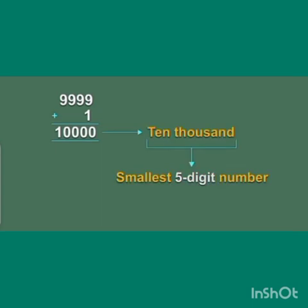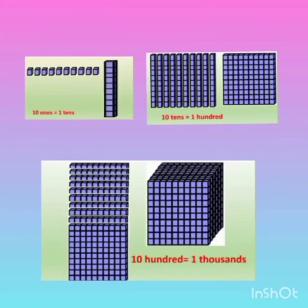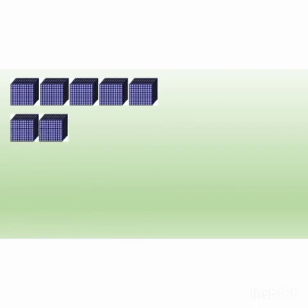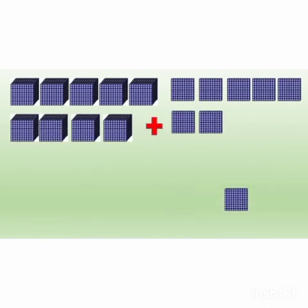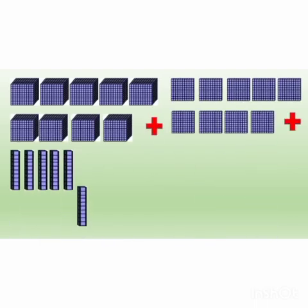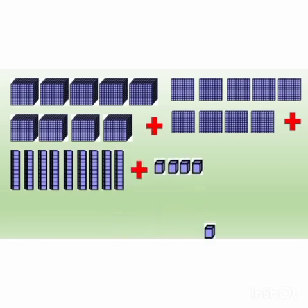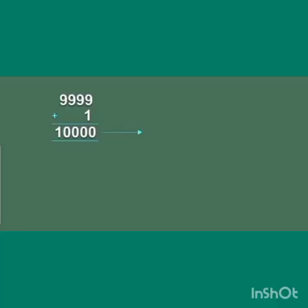Let's understand the making of 5-digit numbers with the help of blocks. Here, you can see 9 blocks of 1000, 9 blocks of 100, 9 blocks of 10, and 9 blocks of 1s, and single block of 1s for making 5-digit number.